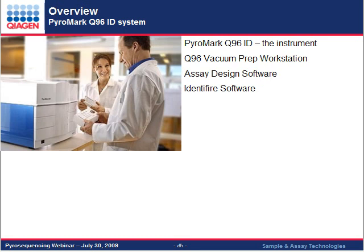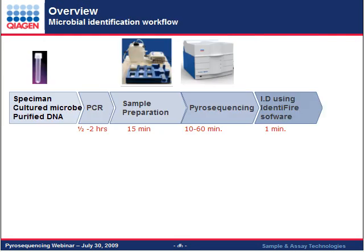When talking about microbial identification, the system people would normally purchase is the Pyromark Q96 ID system — a 96-well platform mainly used for microbial identification and resistance typing. When you purchase the instrument, you get the system, the instrument, the vacuum prep workstation used to prepare your samples, and also assay design software and identifier software to help you identify the isolates in your sample.